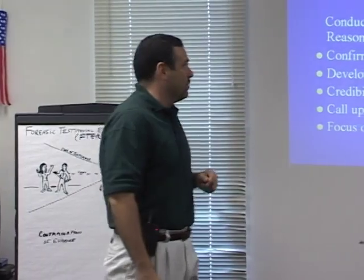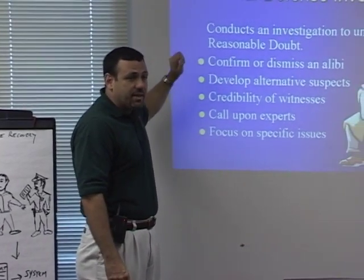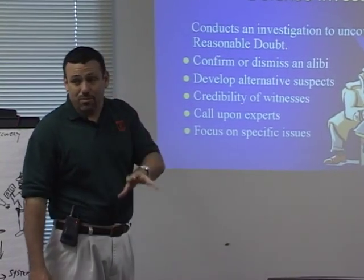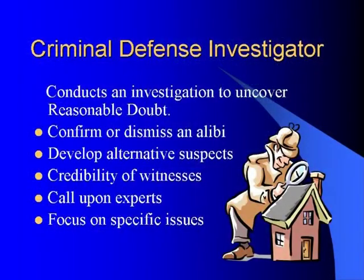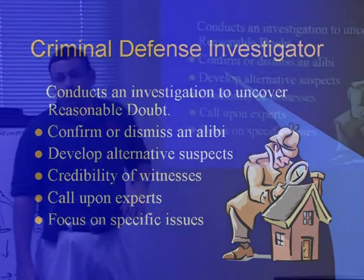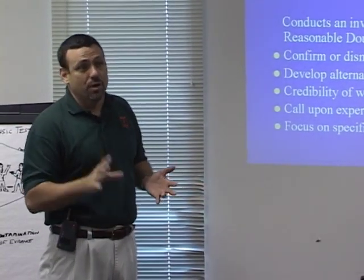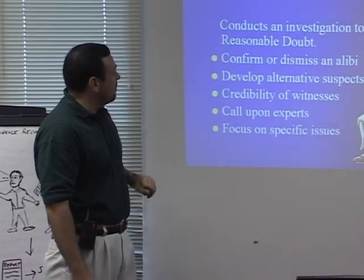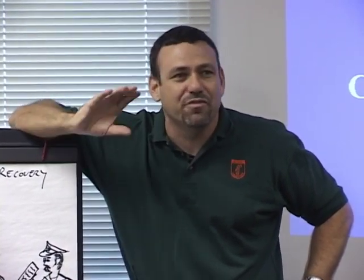Fundamentally, in criminal defense investigation, we conduct an investigation to uncover reasonable doubt. We can confirm or dismiss an alibi, develop alternative suspects, question the credibility of witnesses, call upon experts to help evaluate evidence, and focus on specific issues related to identification, Fourth Amendment, or Fifth Amendment. Any issue you can imagine. Your role is to uncover reasonable doubt — and how do you do that? By getting the truth. Our job isn't really to define reasonable doubt — it's to uncover evidence, pursue the truth, and report it to counsel.